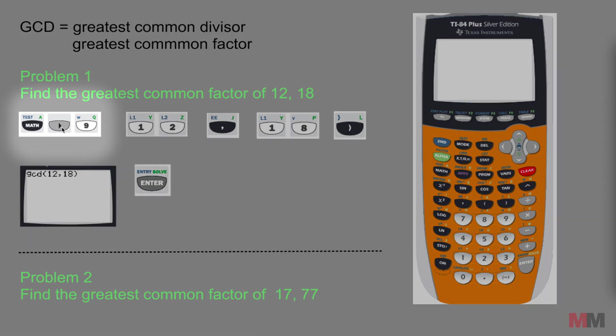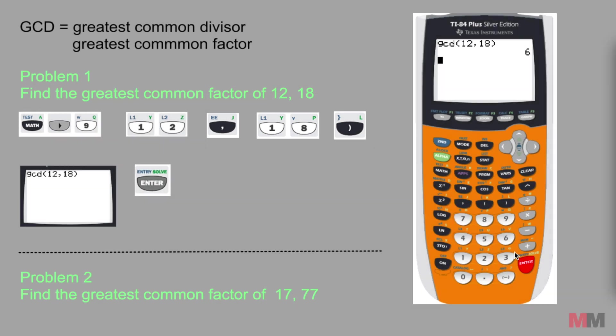You hit math, the right arrow key and 9, which accesses the function to find the greatest common divisor. Then let's just type in the first number 12, 1, 2. The comma button is right here right above the 7, and then just type in the other number 18 and complete the parentheses. So if you did that correctly and you hit enter then you will get the answer right away. The greatest common divisor of 12 and 18 is 6.